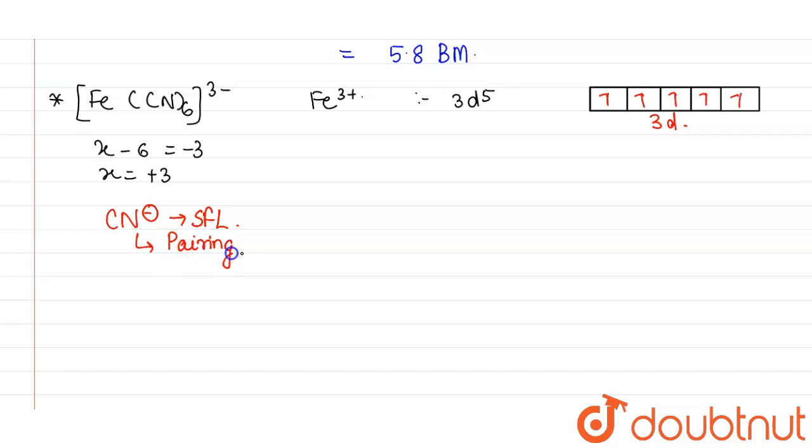Let us see after pairing, how many unpaired electrons are present. This is 3d, 4s and 4p. There are 5 electrons. After pairing, the electrons will pair up in the first two orbitals and 1 unpaired electron will be present. So n equals 1 in this complex.